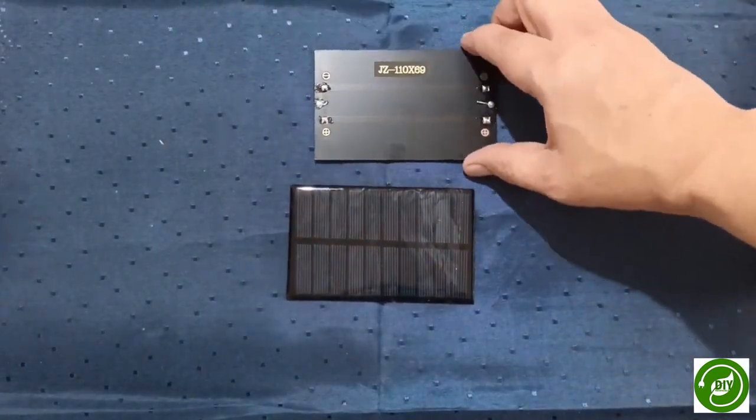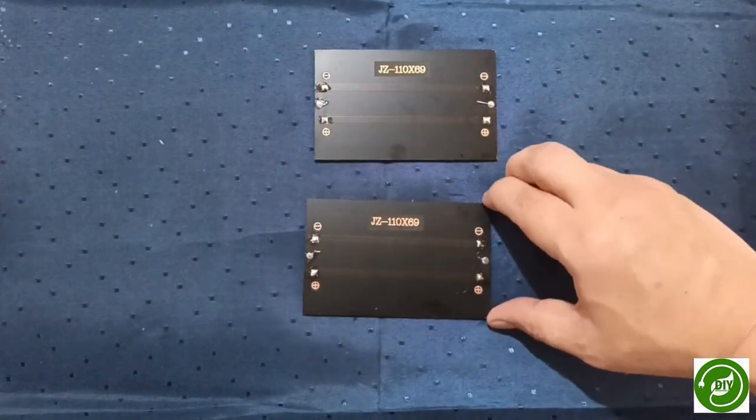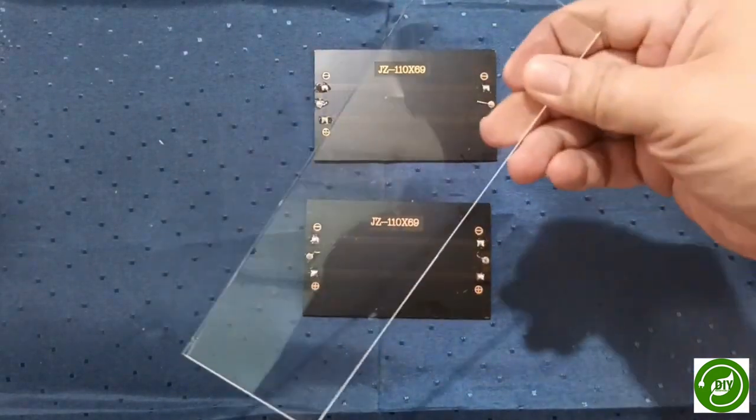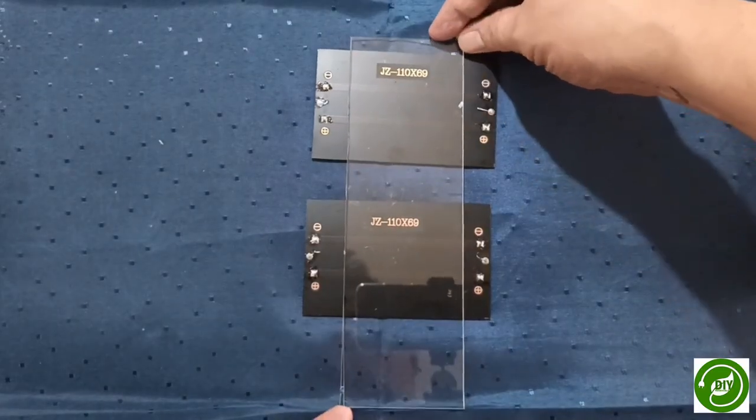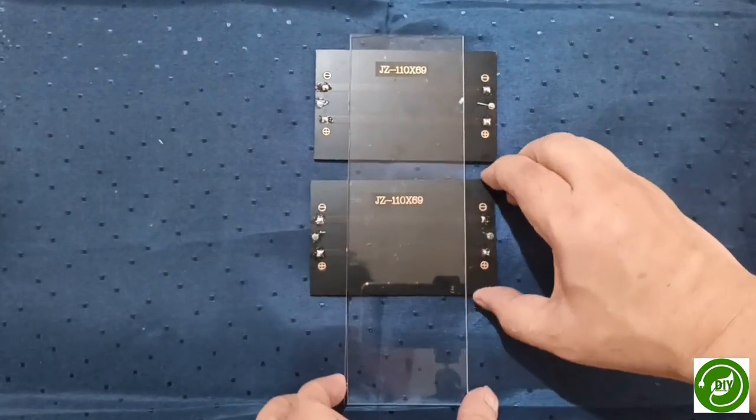Start by gathering two mini solar panels. Take an acrylic sheet and assemble the two mini solar panels together.